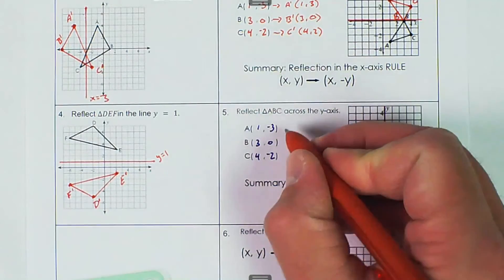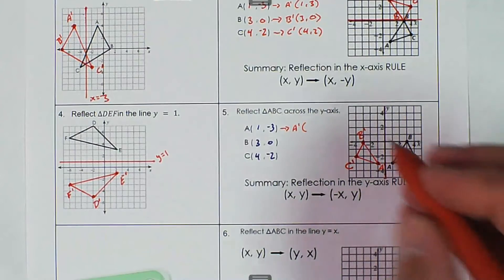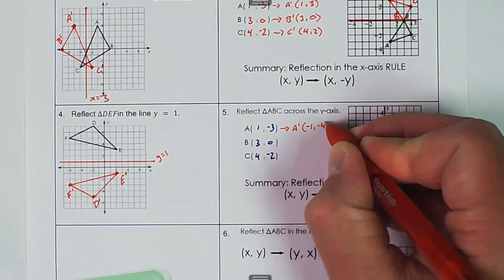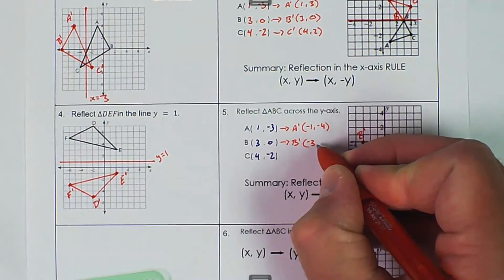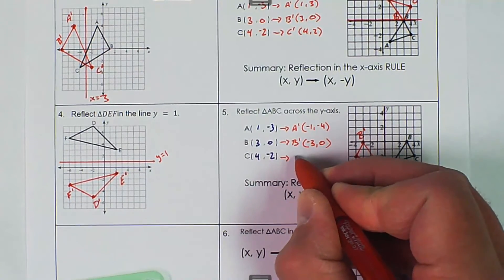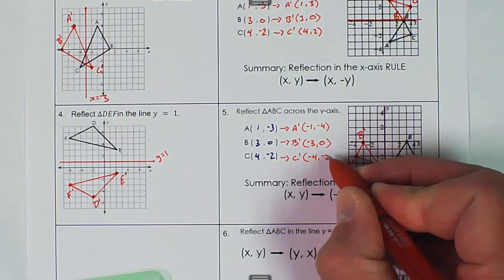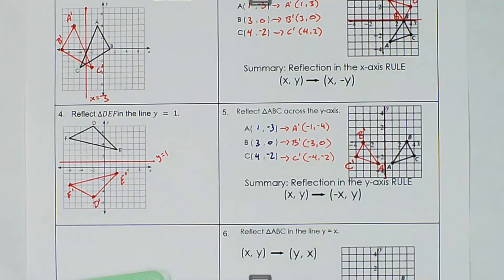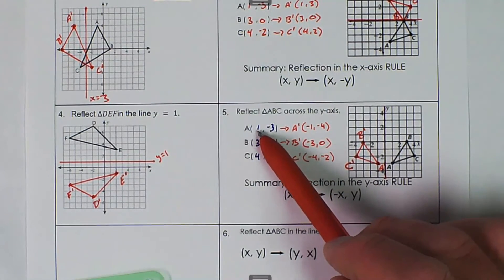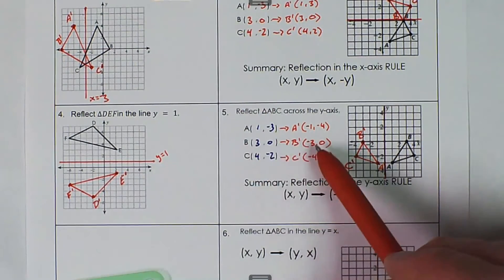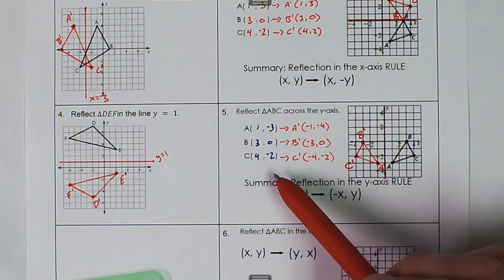We can write down our new coordinates: A prime is (negative 1, negative 3), B prime is (negative 3, 0), and C prime is (negative 4, negative 2). The only thing that changes is the x value goes from positive to negative — positive to negative, positive to negative, positive to negative — and the y value did not change.